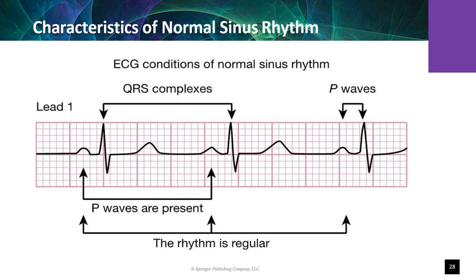For electrocardiographic interpretation of normal sinus rhythm, four features must be met: there must be a P wave, a QRS complex, and the rhythm must be regular.